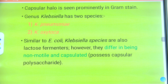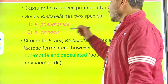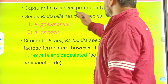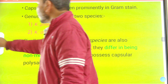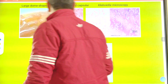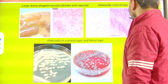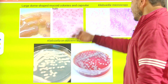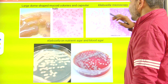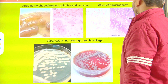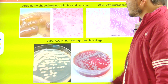Klebsiella has a capsule which is a mucus covering of their outer membrane. This capsular halo is seen prominently in Gram staining. When we perform Gram staining, these are Gram negative organisms. A clear white zone (halo) is visible because the capsule does not take up the stain, so the bacteria stain but leave a clear unstained zone around them due to the capsule.